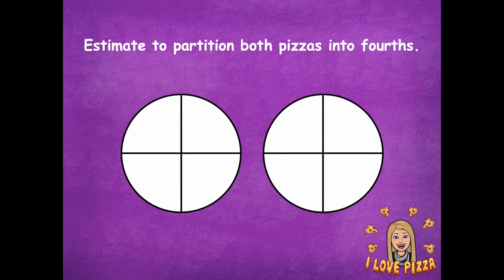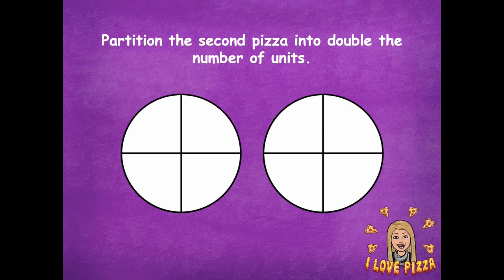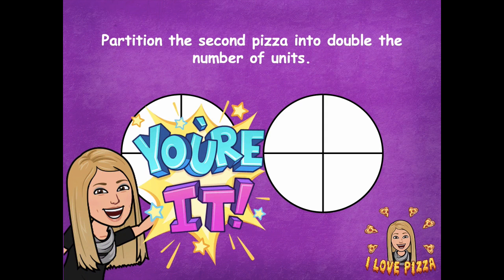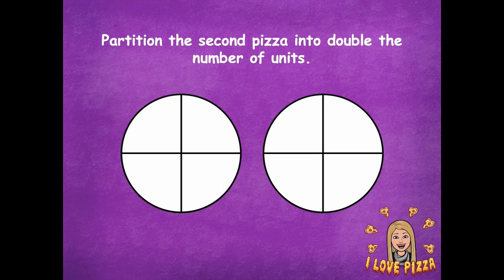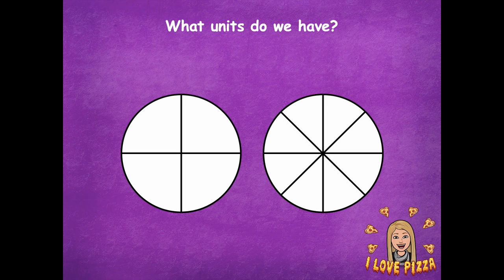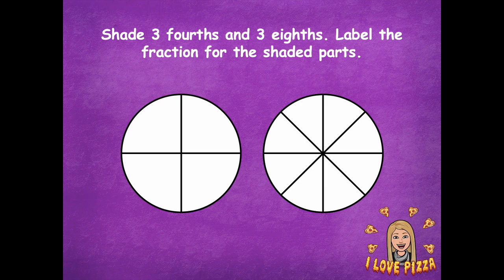Here are my fourths. Now we're going to partition the second pizza into double the number of units. So right now it's in four units — you need to double it. Pause the video, just your second pizza, and partition it to double the number of units. Think about how we've done that in our previous problems. Here, I can partition each one into two, and now I have double the number of units. So what units do we have now? We have fourths and eighths. Now shade three-fourths and three-eighths and label the fraction for the shaded parts. Pause the video, shade three-fourths and three-eighths, and don't forget to label your fractions.